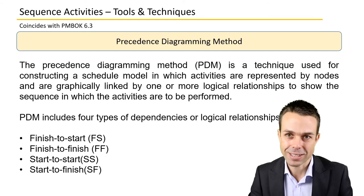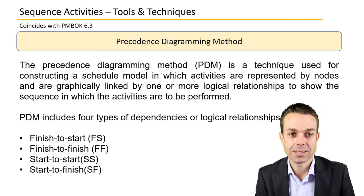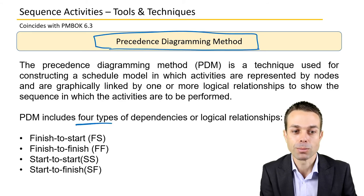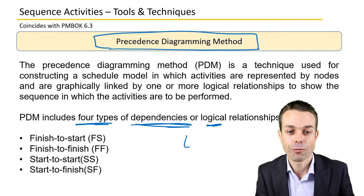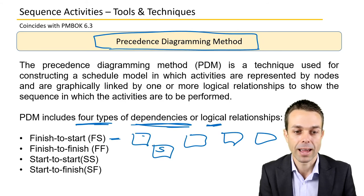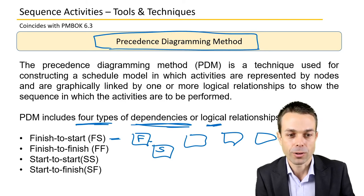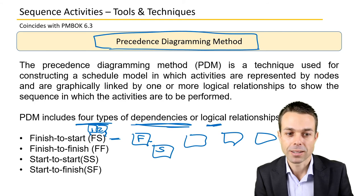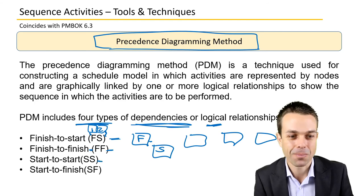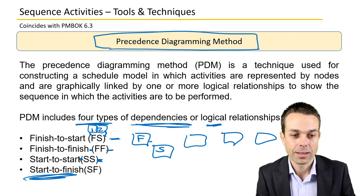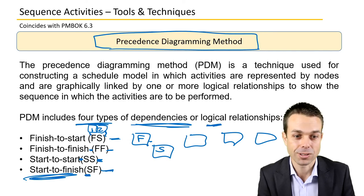Now let's look at the tools and techniques in more detail. The precedence diagramming method includes four types of dependencies or logical relationships. Finish-to-start: the second activity cannot start until the first one has finished. Finish-to-finish: the second one cannot finish until the first one has finished. Start-to-start: the second one cannot start until the first one has started. Start-to-finish: the second one cannot finish until the first one has started.